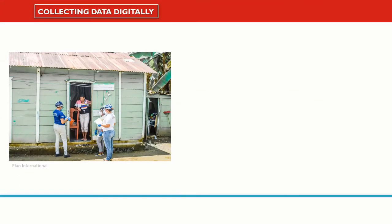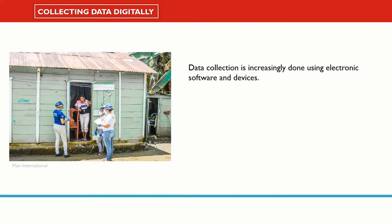Data collection is increasingly done using electronic software and devices. This may include elements of monitoring which are CVA-specific, such as e-voucher platforms which can allow the direct collection and analysis of expenditure data. However, much of the software and devices used will apply regardless of modality — for example, applications like ODK, Magpie, and KoBoToolbox.